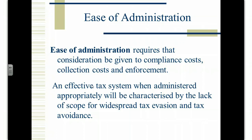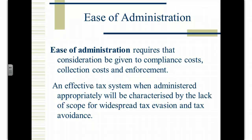An effective tax system, administered appropriately, would be characterised by a lack of scope for widespread tax evasion and avoidance — that will in a sense become automatic. In Ireland we have the Revenue Commissioners, primarily involved in collection of taxes, and they have a staff of only a couple of hundred — maybe 450 at peak, maybe down towards 350 now. In terms of the entire country, that is a pretty small organisation.